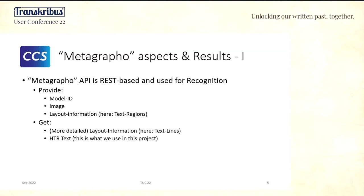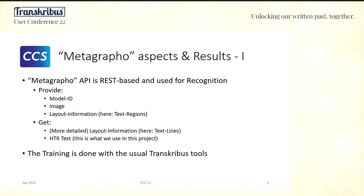Coming now to the Metagrapho API in a bit more detail — for those not familiar: in our case we used it in a simple way. You have a model, and you provide via the API the image, the model ID, and in our case some layout information — specifically the text region. You get back the next detailed level of layout, which is text lines, and of course the main output for our project was the text itself. Training was done independently using the usual Transkribus tools, and then we used this REST API for mass production.